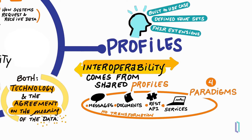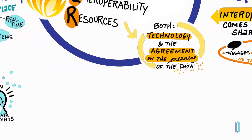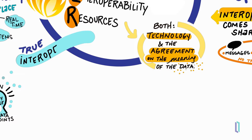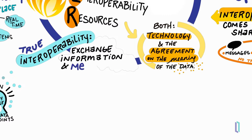Data expressed as FHIR can be used in messages, documents, and REST APIs. Since FHIR is machine readable, it can also be used in services, such as decision support services. Interoperability comes from using the same FHIR profiles in each system. True interoperability comes from exchanging information and having the intended meaning come across.